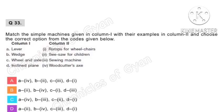Question 33. Match the simple machines given in column 1 with their examples in column 2 and choose the correct option from the codes given below. Correct answer is option D.